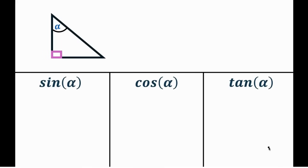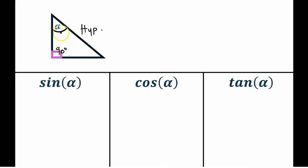Now let's look at another example. We have a right triangle because the 90-degree angle is here. The hypotenuse is the side opposite to this right angle. Our angle of interest is alpha. The side opposite to alpha is the opposite side, and the remaining side is clearly the adjacent side.